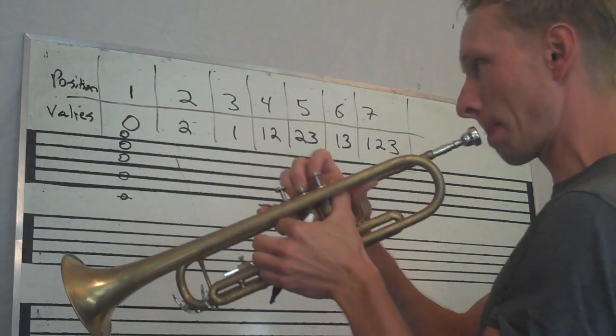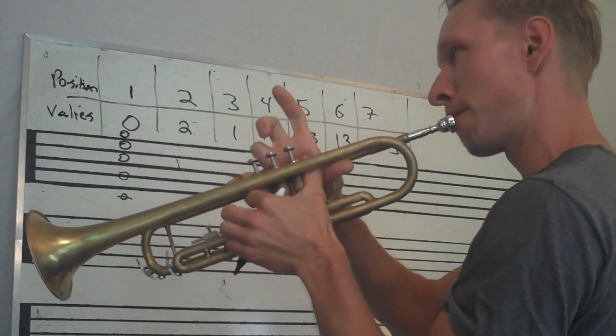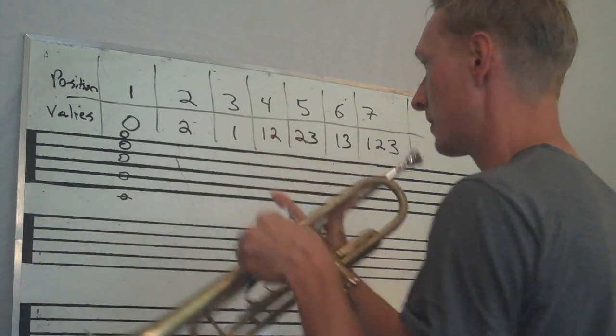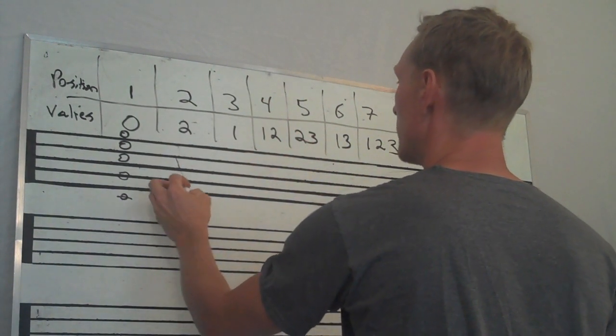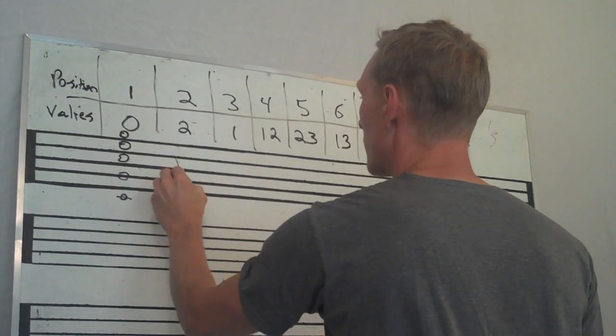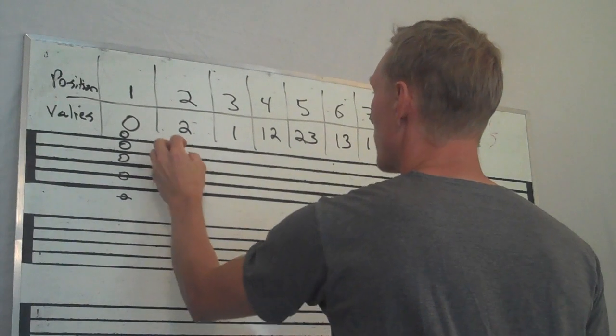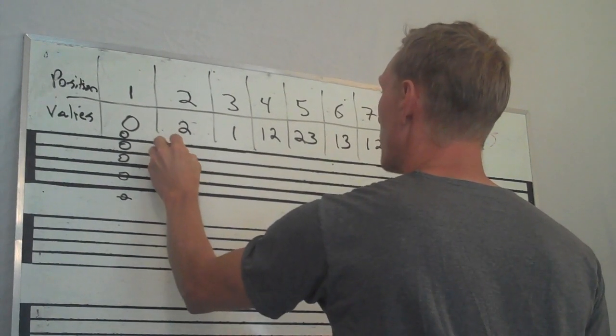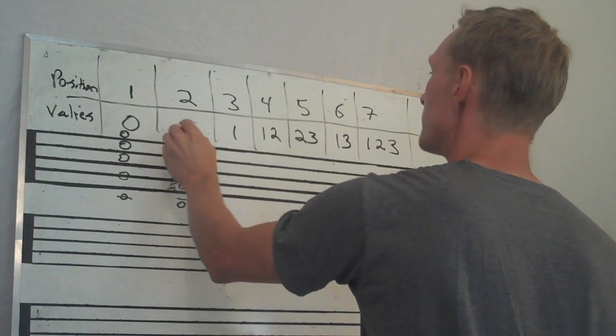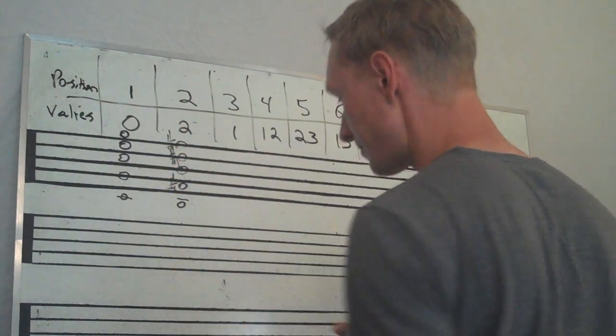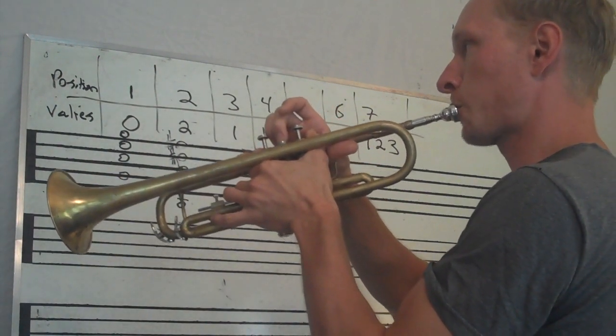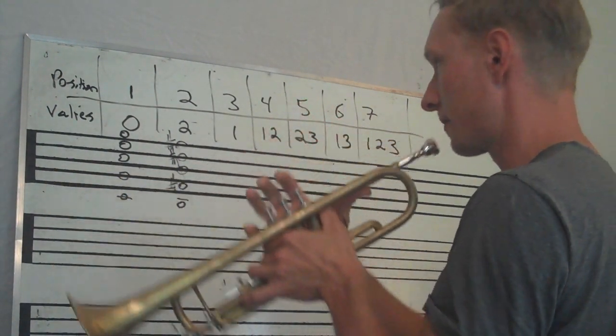So here's second position. Here's B. And it's going to go up in the same way. So there's B, F-sharp, B, D-sharp, F-sharp. There's those.